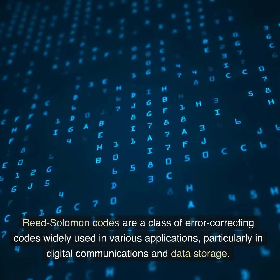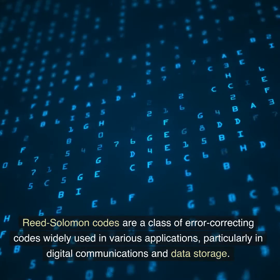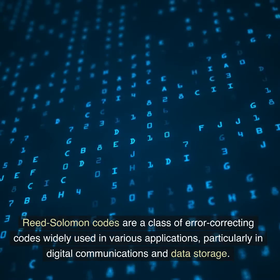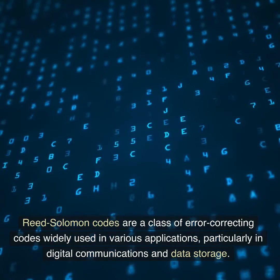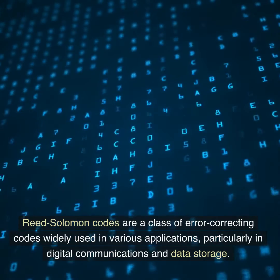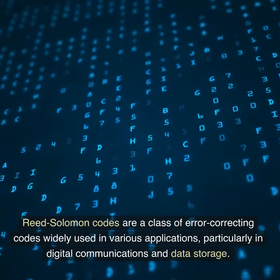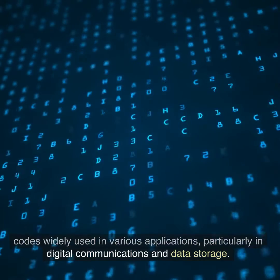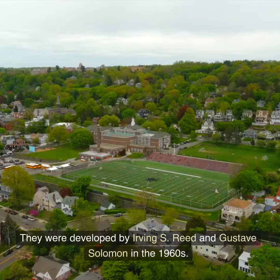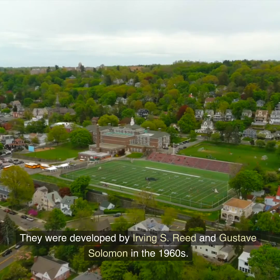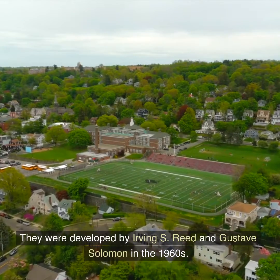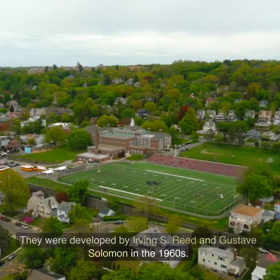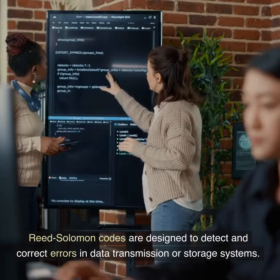Reed-Solomon codes are a class of error-correcting codes widely used in various applications, particularly in digital communications and data storage. They were developed by Irving S. Reed and Gustav Solomon in the 1960s.